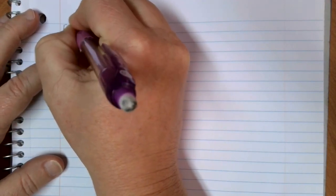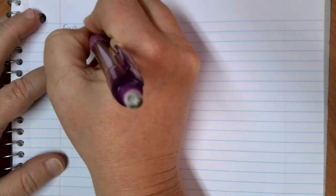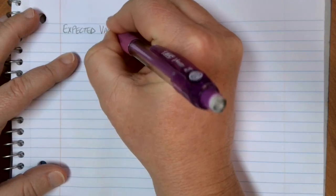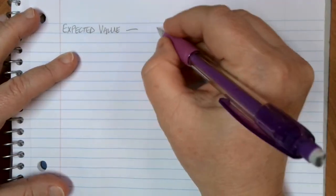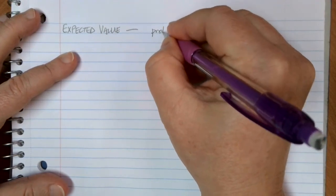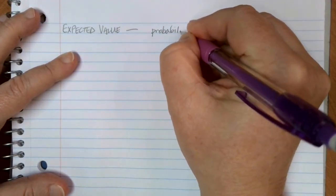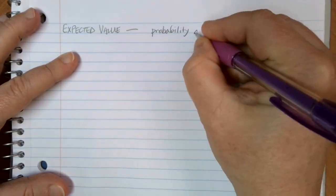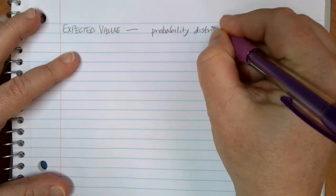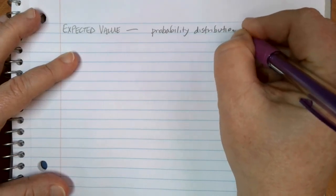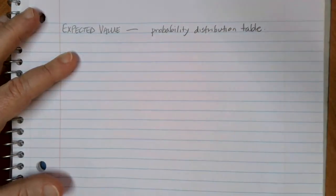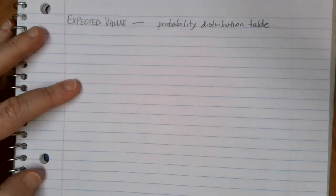One common application of probability is to find something called expected value. Before we get into doing some expected value calculations and talking about how that works, in order to calculate expected value, the first thing that you need to do is come up with something called a probability distribution table. So let's look at a couple of examples of what a probability distribution table might look like.